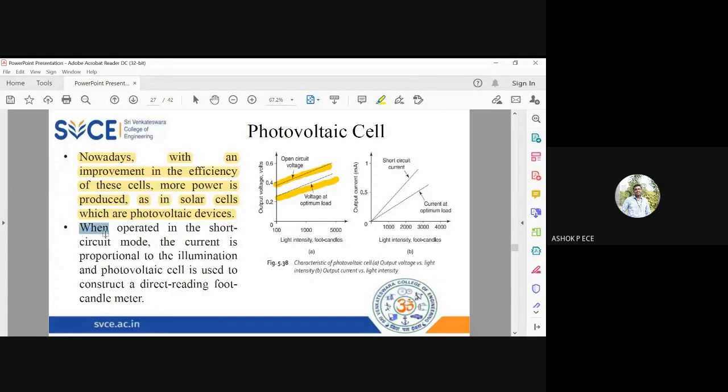When operated in short-circuit mode, the current is proportional to the illumination. You get an almost straight line showing that in short-circuit mode, increasing illumination increases short-circuit current. This is used to construct a direct-reading foot-candle meter. The photovoltaic cell produces an equivalent voltage proportional to the amount of incident light, allowing you to determine the range of light intensity from an external source.